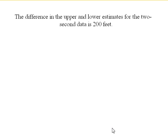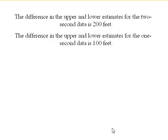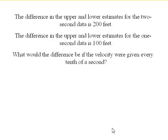So, for two-second data, it's 200 feet. For one-second data, it's 100 feet. Now, what if the velocity was given every tenth of a second? Well, the difference between the upper and lower would be one-tenth times 100, or 10 feet. So, we're improving our accuracy.